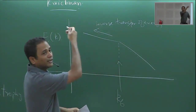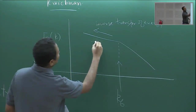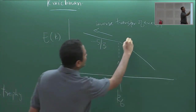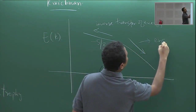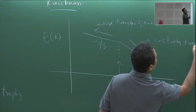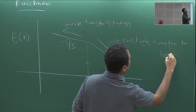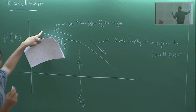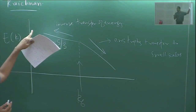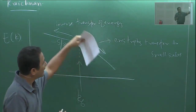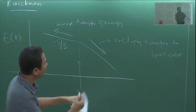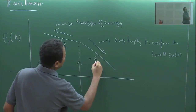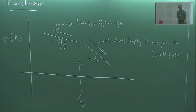Energy tends to transfer to larger scales, and a dimensional analysis gives a spectrum that goes as k^{-5/3} for this inverse energy cascade. On the other side, below the forcing scale, you get an enstrophy transfer to small scales, and the spectrum there goes as k^{-3}.